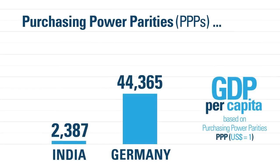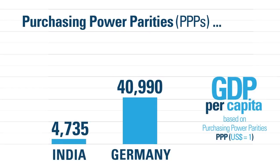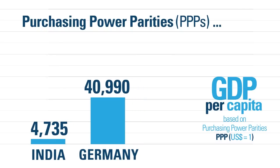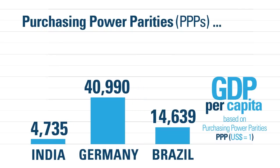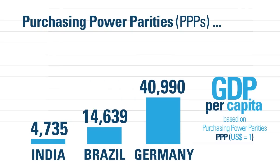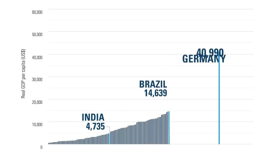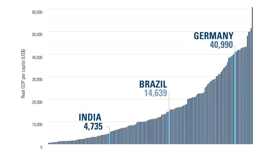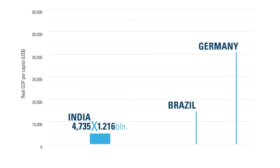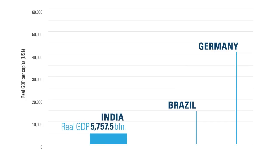Now we can convert the GDP per capita of each country in real terms. Let's add Brazil. The bar heights express the GDP per capita of each country. Let's place the highest GDP per capita on the right and lowest on the left. India's population is about 1.2 billion. Multiplying the population by India's real GDP per capita gives its total GDP in real terms — same for Brazil and for Germany.